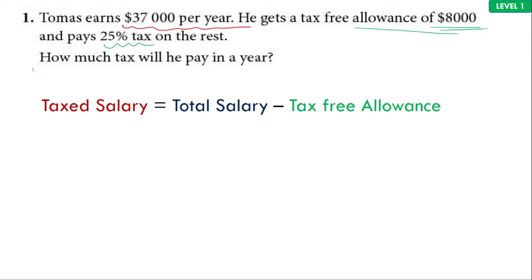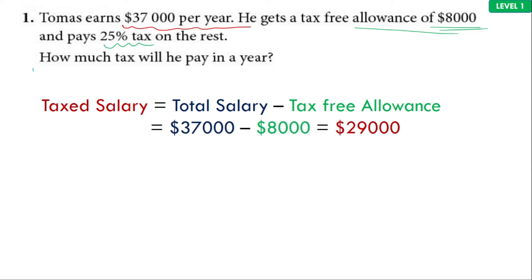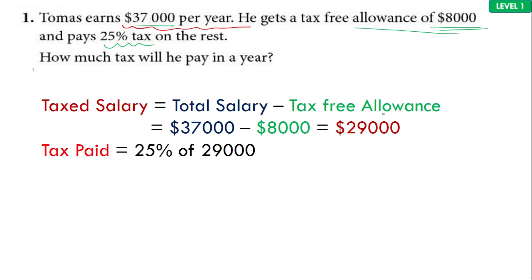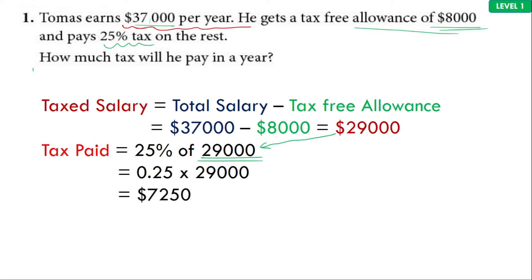Step 1: what is the taxed salary that he is going to have? The formula is total salary minus the tax-free allowance. It's a direct and easy question — you have the total salary given and subtract the allowance. The next part is 25% being paid, so the tax paid should be 25% of his taxed salary, which gives you the answer of $7,250.